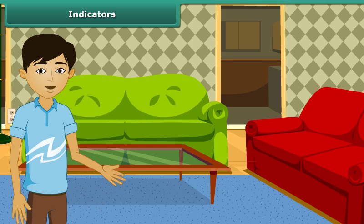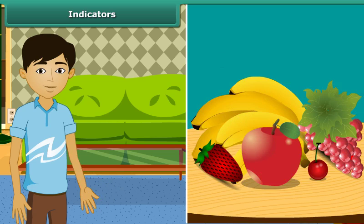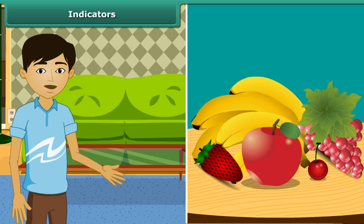Students, how can you find that a fruit is acidic or basic? You can easily test the acidic or basic nature of a substance by making a simple indicator solution at home.